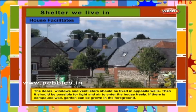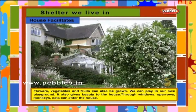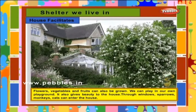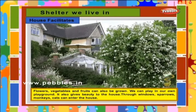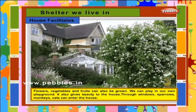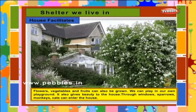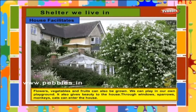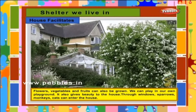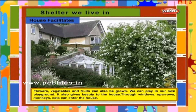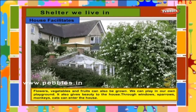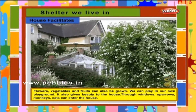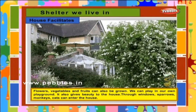If there is a compound wall, a garden can be grown in the foreground. Flowers, vegetables and fruits can also be grown. We can play in our own playground. It also gives beauty to the house.